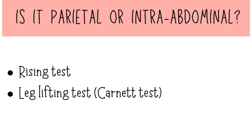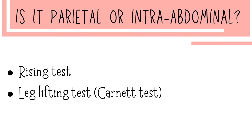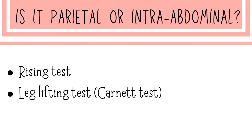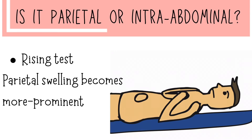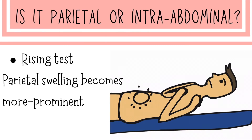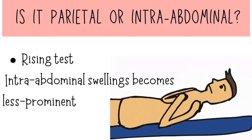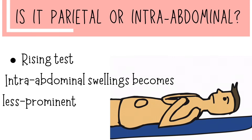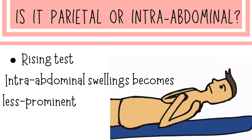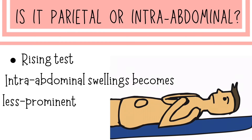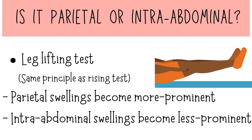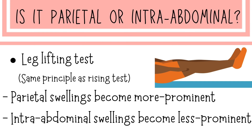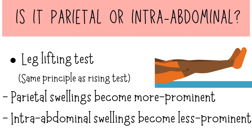This is done by two tests: the rising test and the leg lifting test, also known as Carnett's test. In the rising test, the patient places hands over the chest and raises their head, making the abdominal muscles taut. If the swelling is from the parietal layers, it becomes more prominent. If it becomes less prominent or disappears, it is intra-abdominal, because the taut muscles push an intra-abdominal swelling inward. The same mechanism applies to the leg lifting (Carnett's) test.